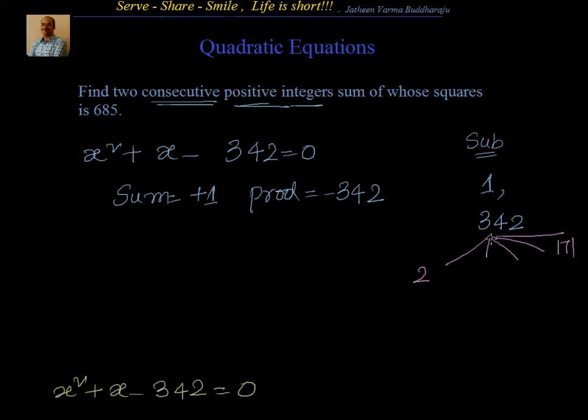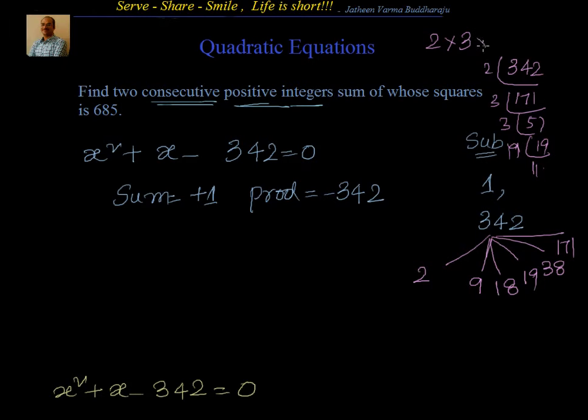Let's start with 2, I have 171. Then 9 will go 19 times. Let's do this in a standard way. We have 2, 171, then 3, 57, then 3 again, 19, and 19, 1. That means this can be written as 2 into 3 into 3 into 19. So we can have 2, 6, 9, 18, 19. But we are interested in a difference of 1. I think that's available here, between 18 and 19.